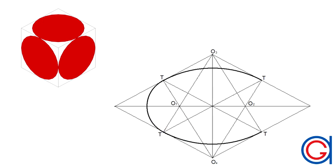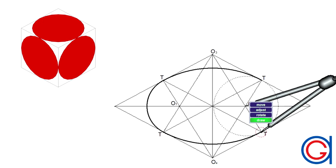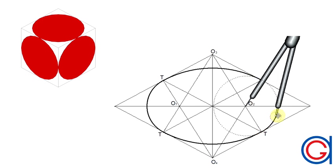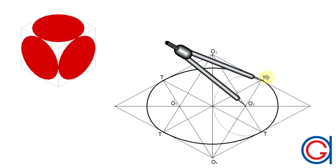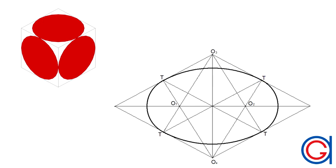And finally with our compass set on point O2 and length O2 t we join the last two tangent points. Here you can see our completed isometric oval.